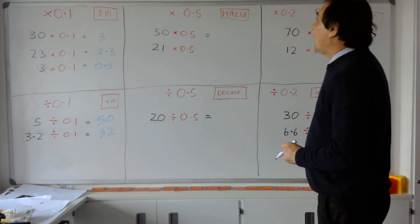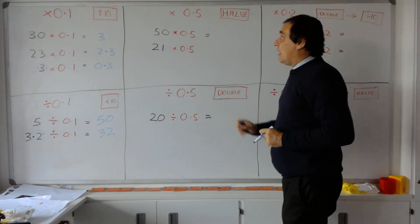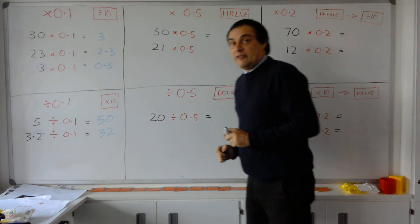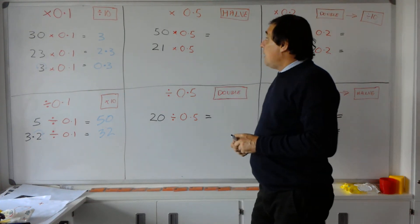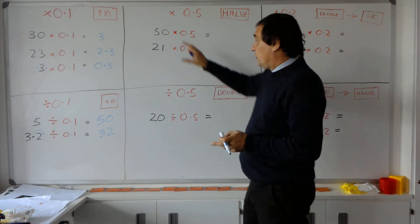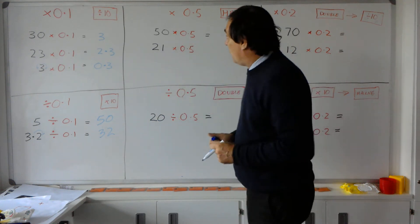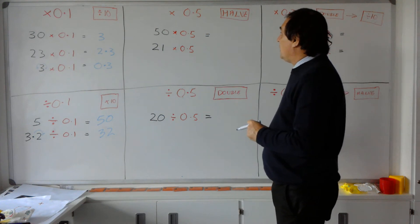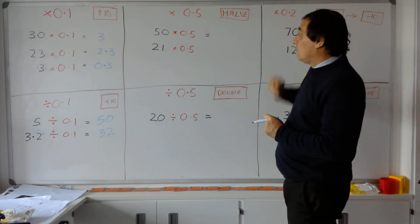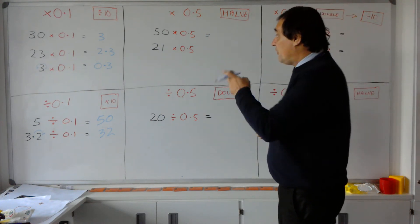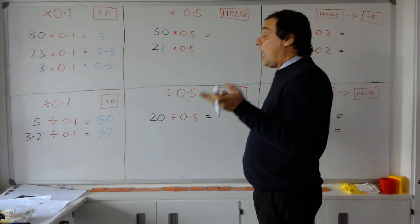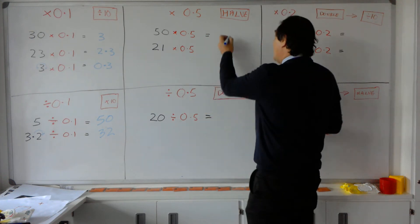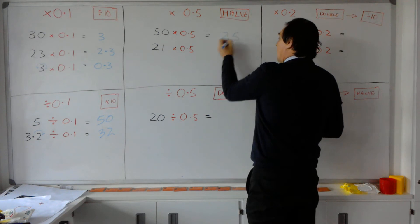Okay, let's go to the next section now and this is when we're dealing with 0.5. So if I am going to be multiplied by 0.5, the sum's asking me to multiply by 0.5, all it means is I'm actually halving the number.